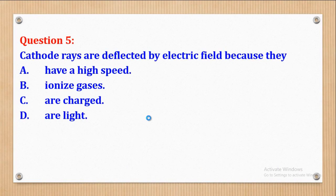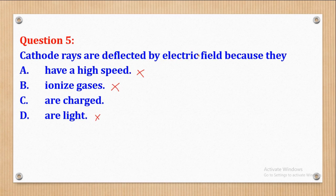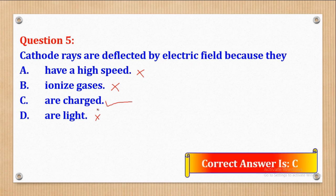Question 5 says cathode rays are deflected by electric field because they: A, have a high speed; B, ionize gases; C, are charged; and D, are light. Deflection by electric field has something to do with charges. Speed does not affect deflection by electric field, nor does ionization of gases or being light. Therefore, cathode rays are deflected by electric field because they are charged. Our answer is part C.